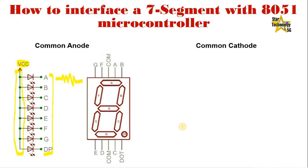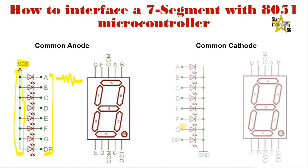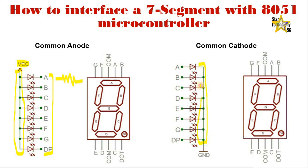In the Common Cathode display, all the cathode connections of the LED segments are joined together to ground or logic low. The individual segments are illuminated by applying a positive supply or logic high via a current limiting resistor to the anode of the particular segment.